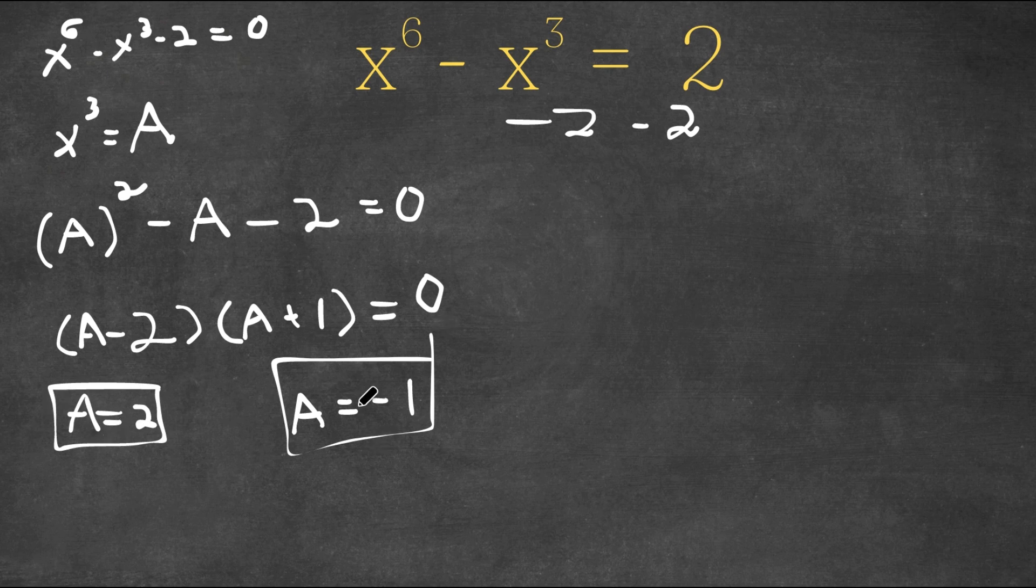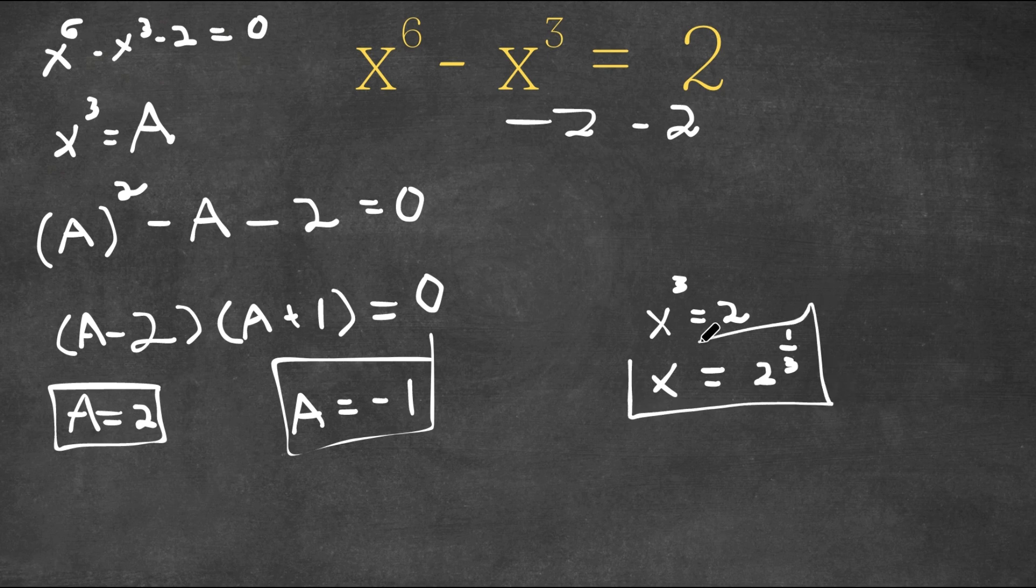So now that we find out the value for a, this means that we can plug this back into this equation. And x to the power of 3 is equal to a. So now we have x to the power of 3 is equal to 2. And if we take the cube root on both sides, we get x is equal to the cube root of 2 or 2 to the power of 1 thirds. So this is one answer.